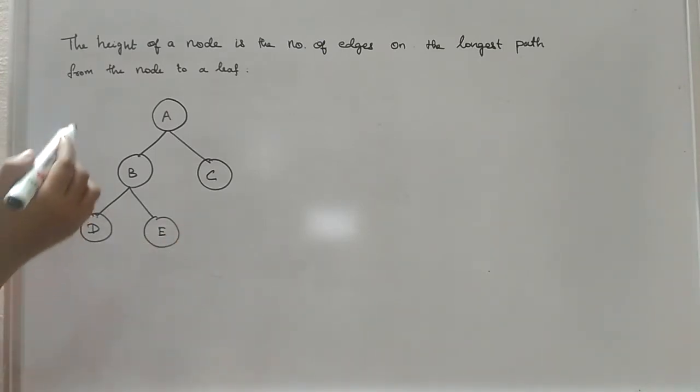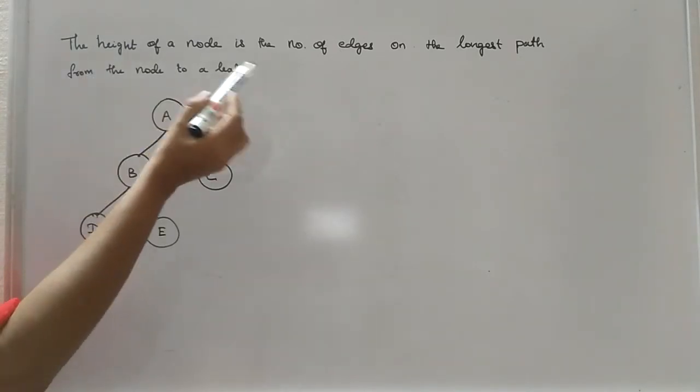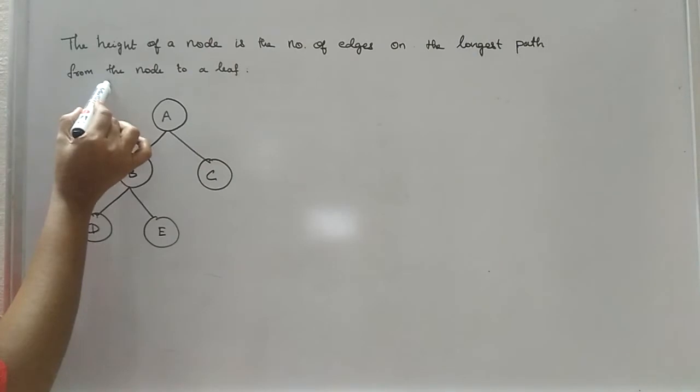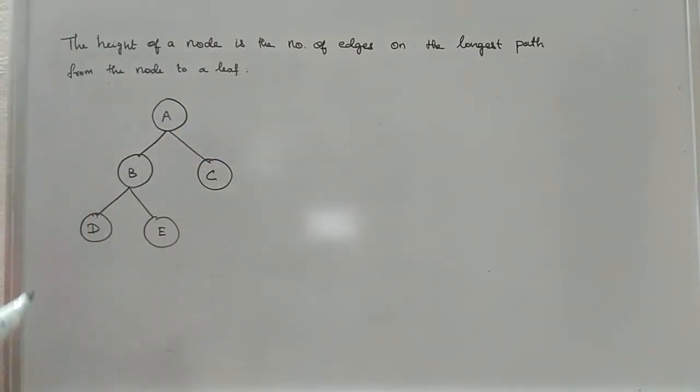So what I have mentioned here, the height of a node is the number of edges on the longest path from the node to a leaf. For example, if I am taking the height of this node, this node itself is a leaf node. There is no other node next to it. So the height of this node will be 0.